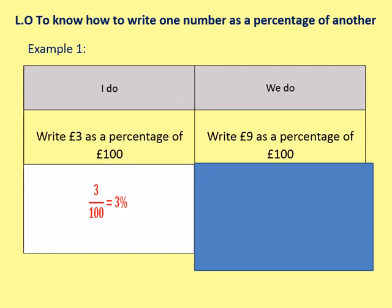Okay, so example one, the first I do and we do of the lesson. The first example, you have to write £3 as a percentage of £100. So this one's quite simple. We have 3 pounds, three out of a hundred, so that is simply 3%.